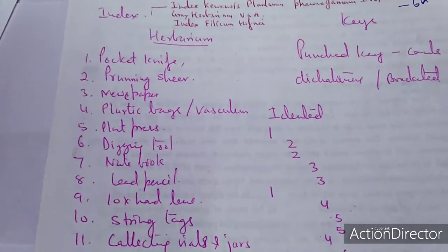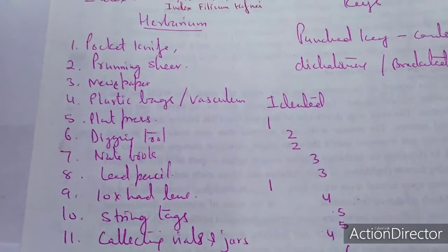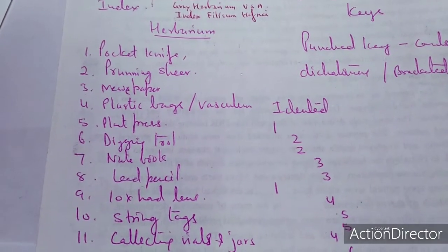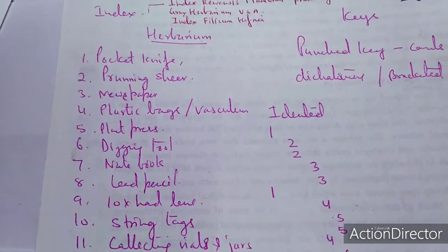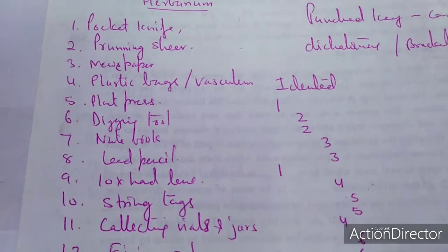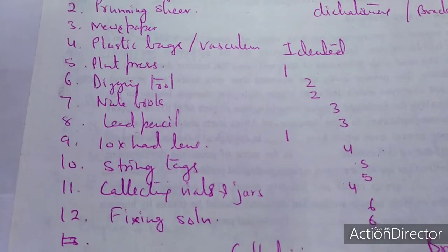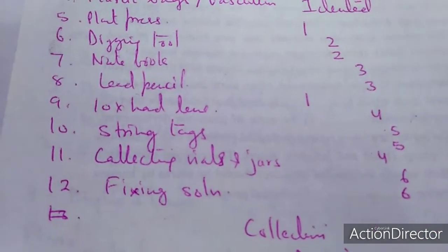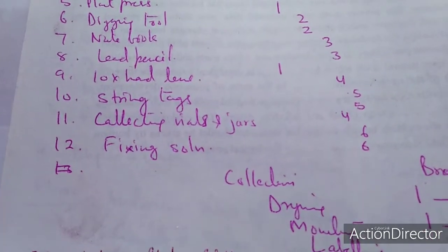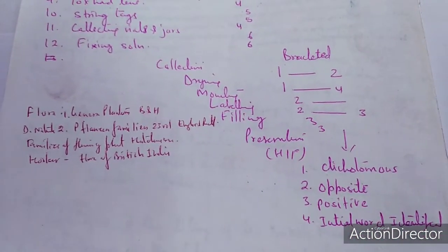If you are going to make the herbarium and start the process of collection of the plant, you should have certain small equipment before going to the forest. These include a pocket knife, pruning shear, newspaper, plastic bags, vasculum, plant press, digging tools, notebook, lead pencils, 10x lens, string, string tags, collecting vials and jars, and fixing solution.